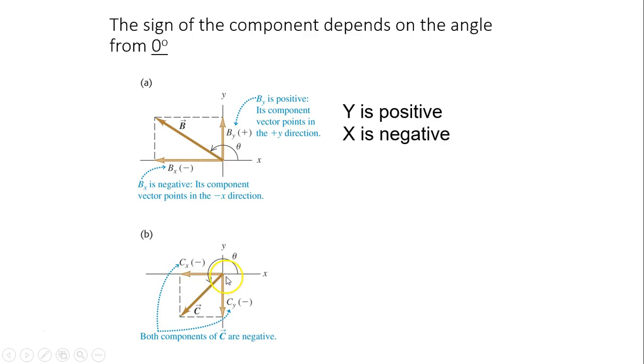In example B, theta is bigger than 180, less than 270. So the vector is in third quadrant. In this case, both Cx and Cy are negative.